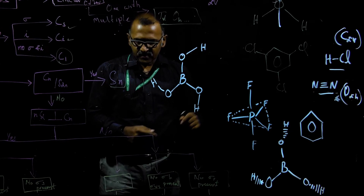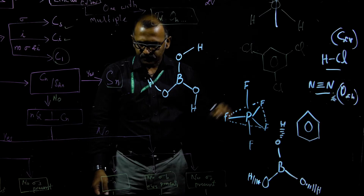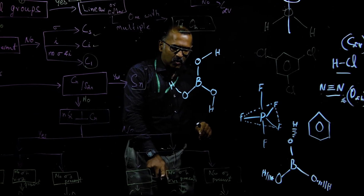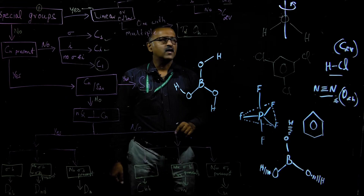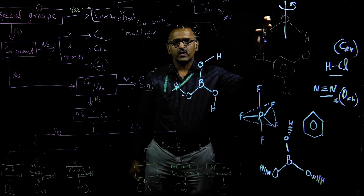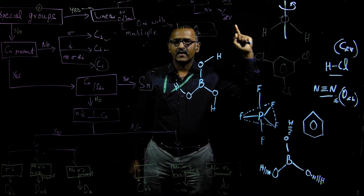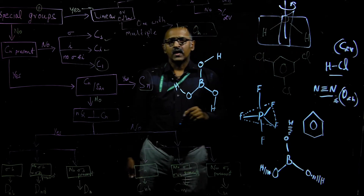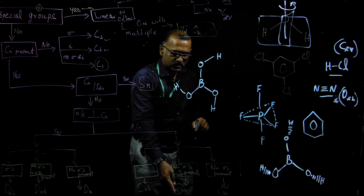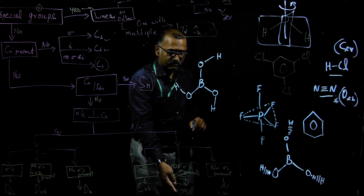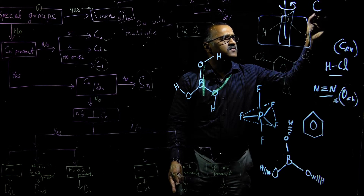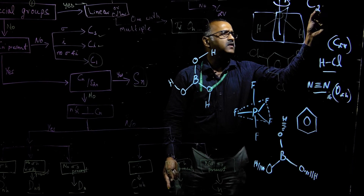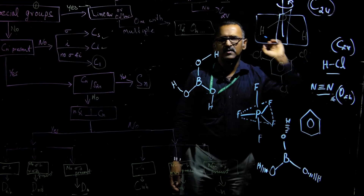There is only one C2 axis for water. Coming to the next question: does it have a sigma H plane? Water is an angular molecule, so it does not have a horizontal plane. But it does have sigma V planes — in fact two: sigma XY and sigma XZ. Since sigma Vs are present and the principal axis is C2, the point group is C2V.